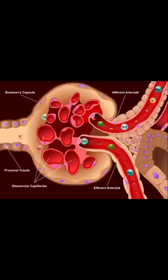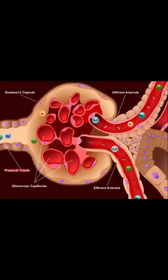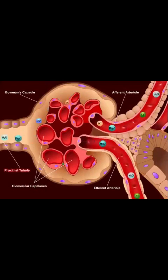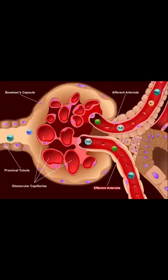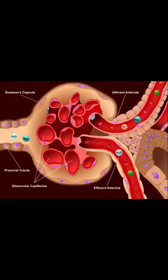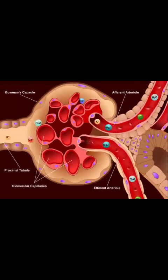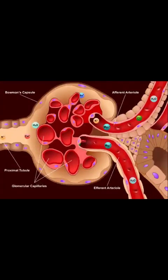The filtrate passes through the proximal tubule, where most filtered substances are reabsorbed back into circulation. What remains unfiltered in the blood continues on through the efferent arteriole. Now that we have reviewed glomerular filtration, let's proceed to regional transport and the mechanism of action of diuretics.